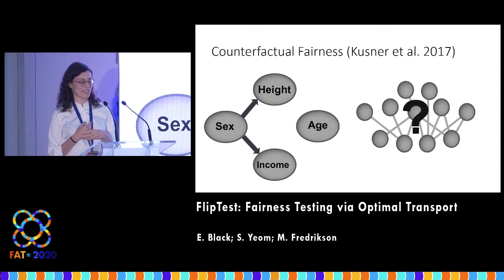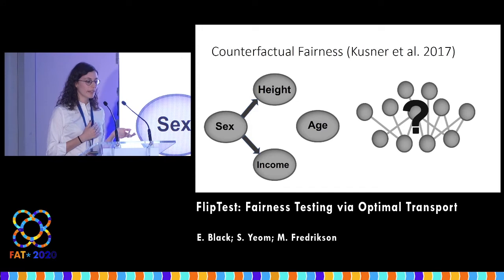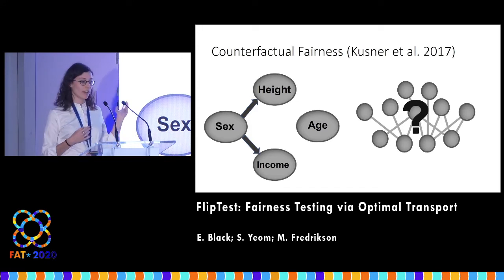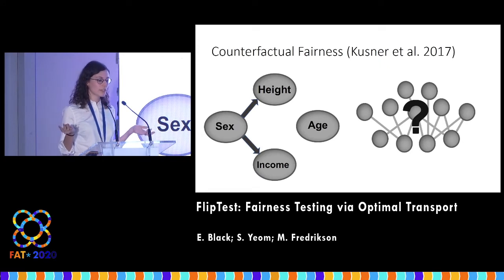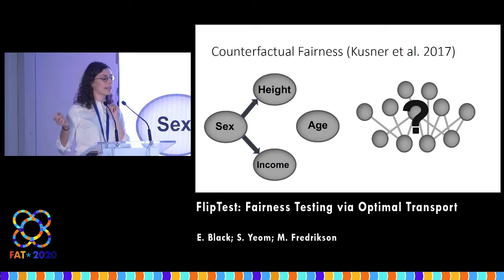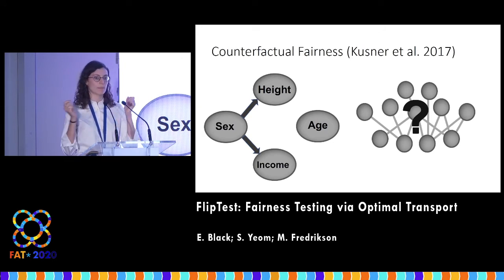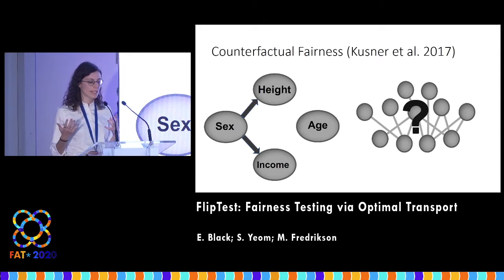Another method we could use to generate the male version of me is counterfactual fairness, developed by Kusner et al. in 2017, where we develop a causal model of the feature space and then intervene on that feature. So in this case we have sex, height, age, and income.